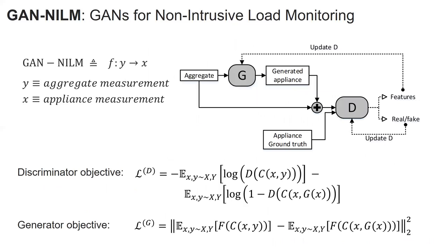Our motivation for using GANs for NILM has two facets. First, the GAN framework is proven to be successful in producing outputs that are hardly distinguishable from real data. For NILM, this means generating more realistic appliance profiles and increasing overall accuracy. The second facet is that the GAN setting allows our model to automatically and implicitly learn loss functions. More precisely, the discriminator part does this loss function learning, and this can empower our models to learn more complex loss functions that cannot be easily represented explicitly by, for example, mean square error.